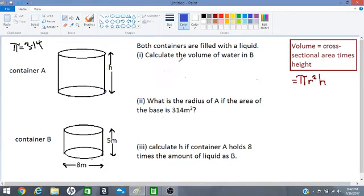So let us find the volume of water in tank B. We have to identify the radius. The radius r would be half of the diameter, 8 divided by 2, and we will get 4 meters.